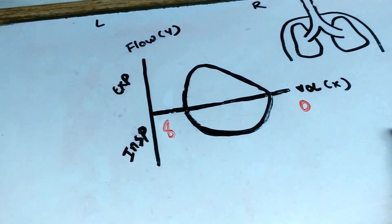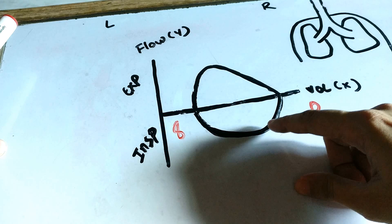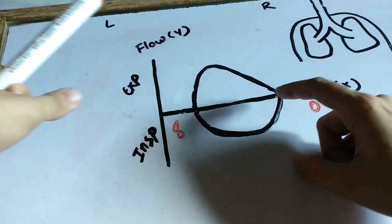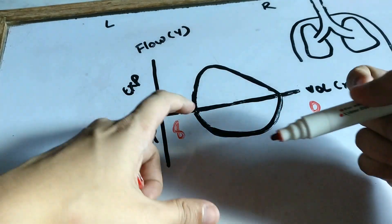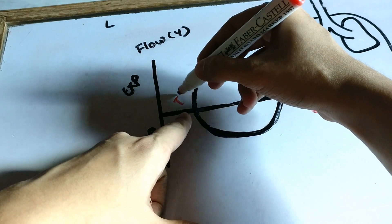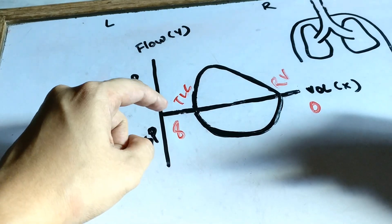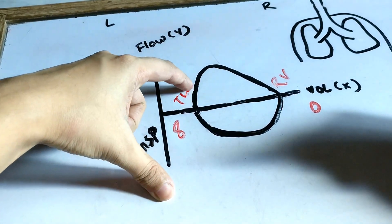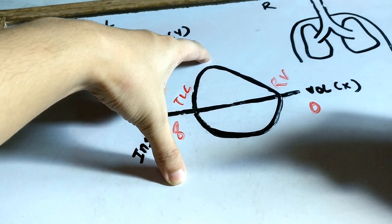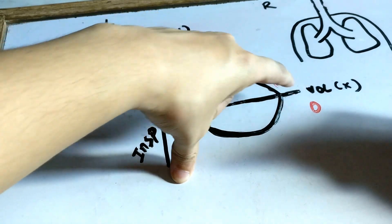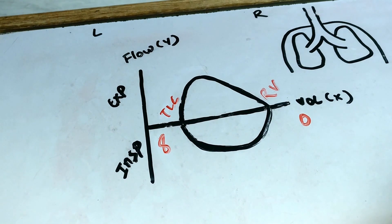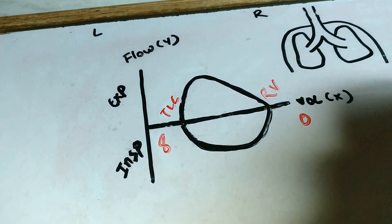So normally when you take a deep breath in, the flow increases during inspiration — it's a nice concave shape — and you go from your residual volume to your total lung capacity. Once you reach your total lung capacity, you start exhaling. The flow during expiration is increased in the beginning and then it goes down till your residual volume. This is what a normal flow volume loop looks like.